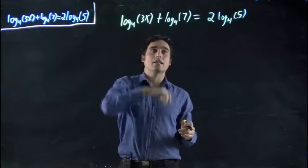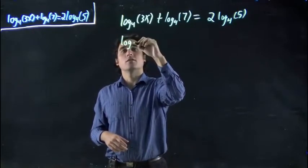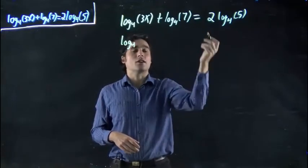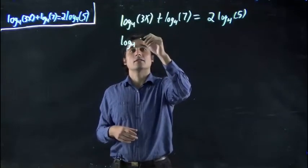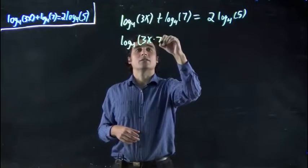So we want to combine these using the product rule. We've got the left hand side product rule, so we've got log to the base 4. Remember product rule: when we have log to the base something plus log to the same base, we multiply the two terms in brackets. So in other words, log to the base 4 of 3x times 7.